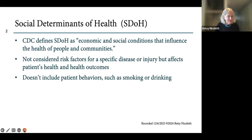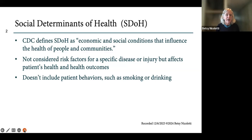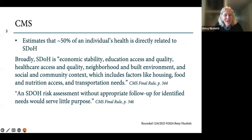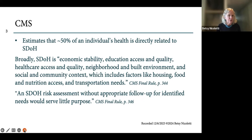The CDC, the Centers for Disease Control, defines the social determinants of health as economic and social conditions that influence the health of people and communities. They're not specific risks for a specific disease or injury, but they affect health outcomes. The CMS, the Centers for Medicare and Medicaid Services, said that estimates show about 50 percent of an individual's health is directly linked to these social determinants of health.